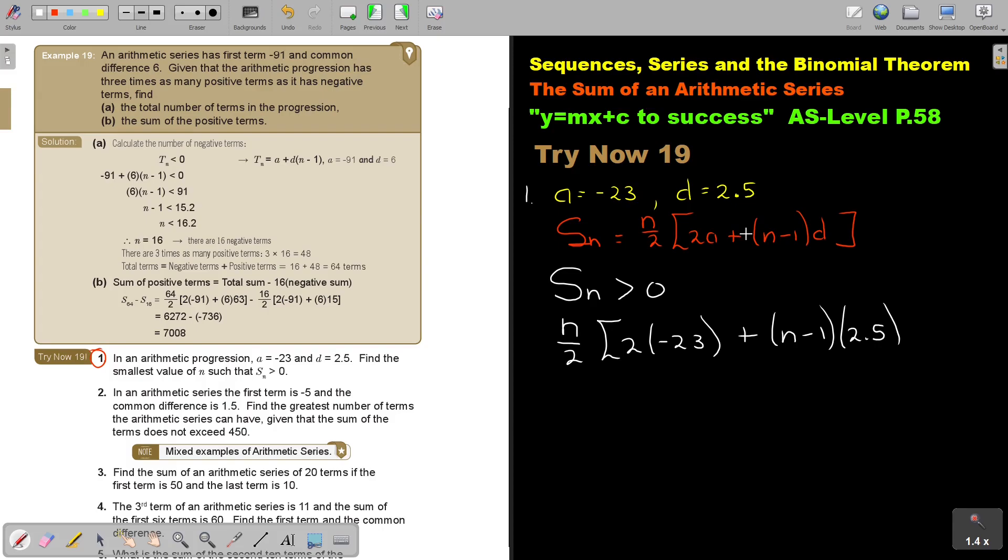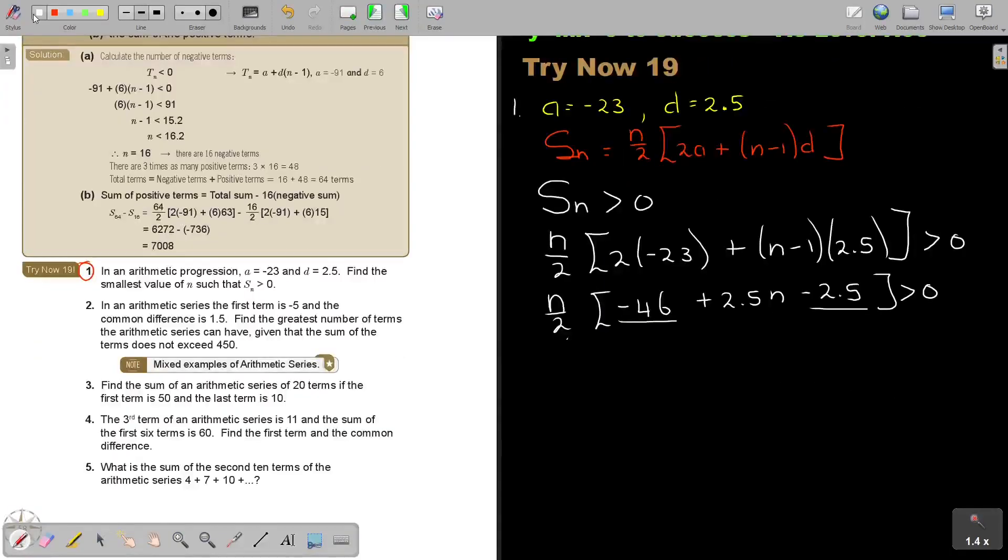I can also put the D in front. It's N over 2, negative 46 plus 2.5N minus 2.5 is bigger than 0. This is one term, actually the 2. If you cross multiply that 2, multiply 0, it will just be 0. Basically, this 2 will become 0.